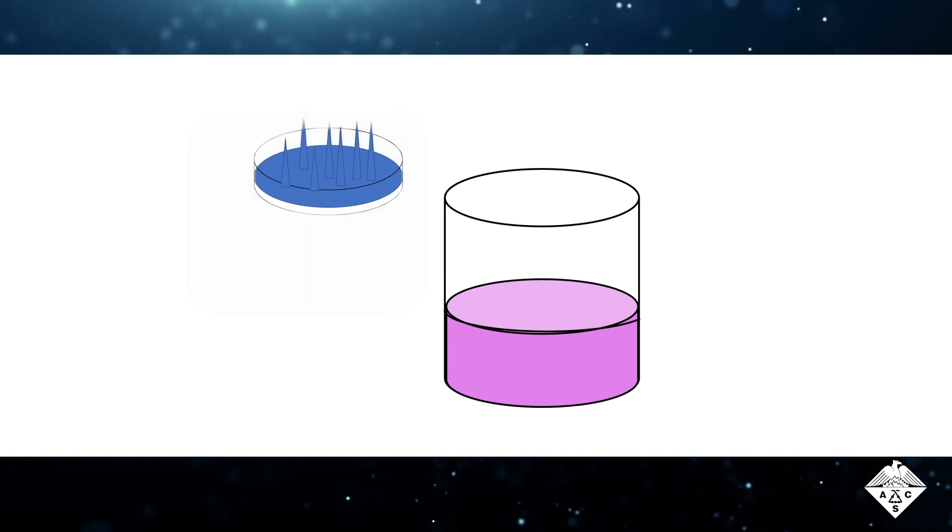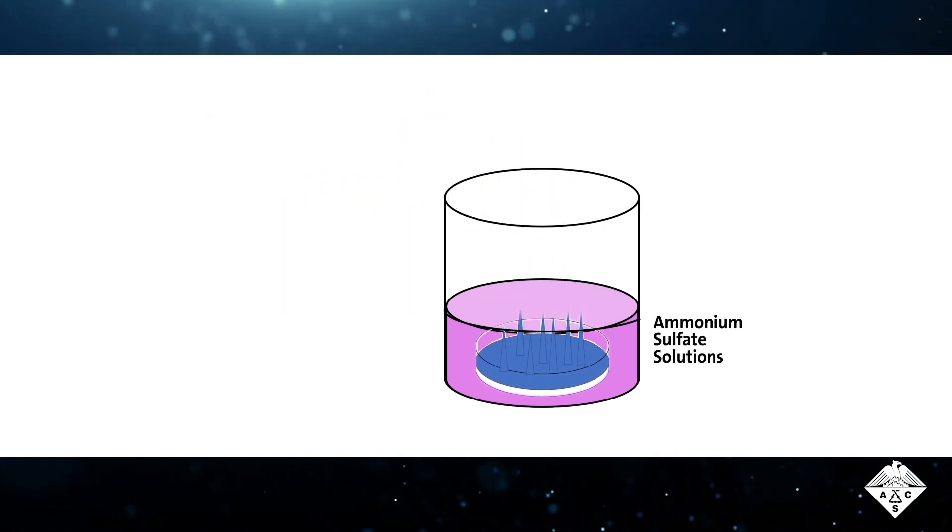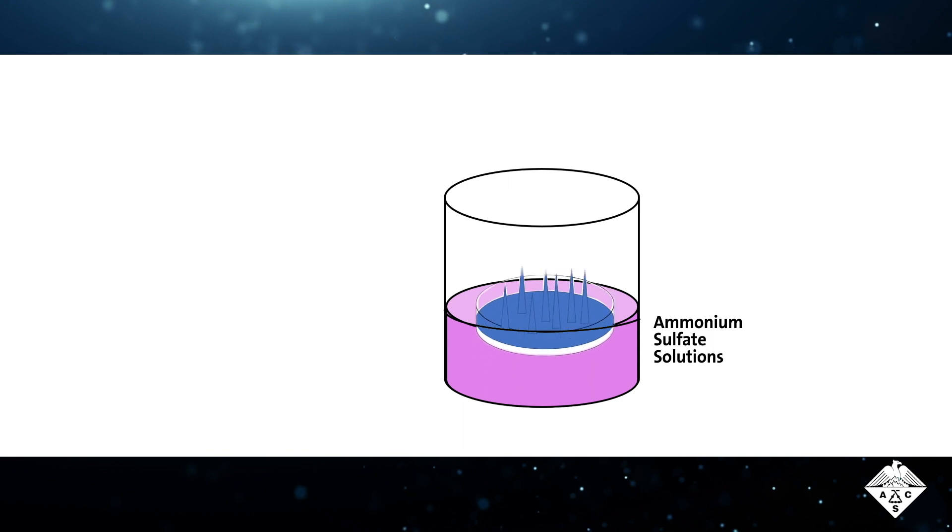The hydrogel was placed in the cold and then soaked in ammonium sulfate to make it into a solid, controllable millirobot.